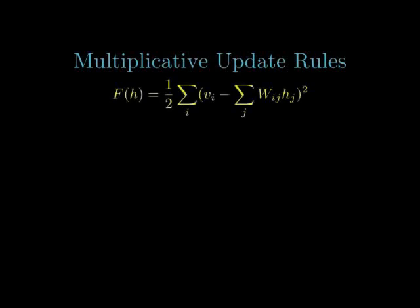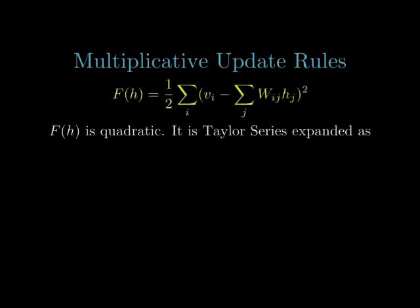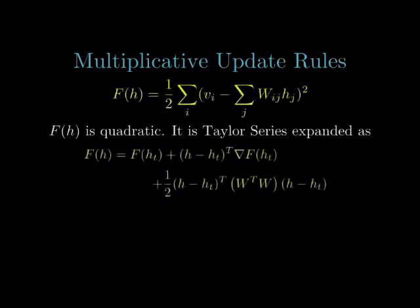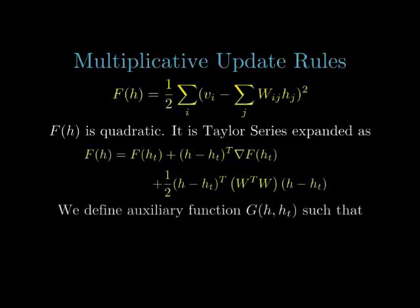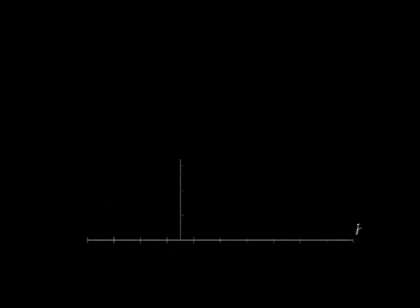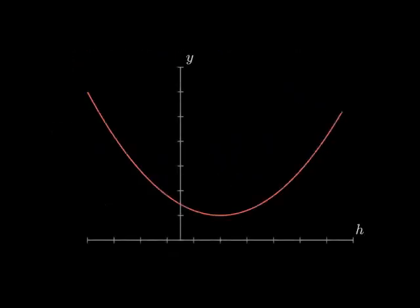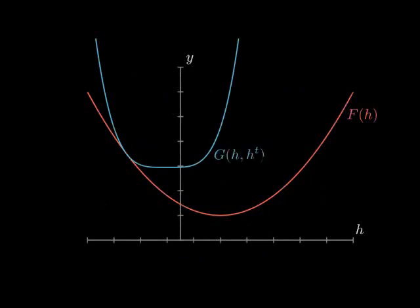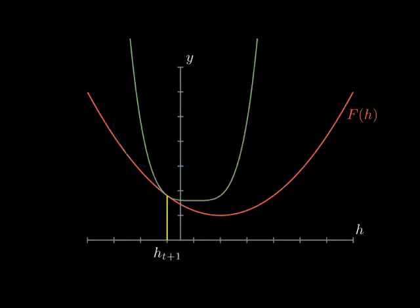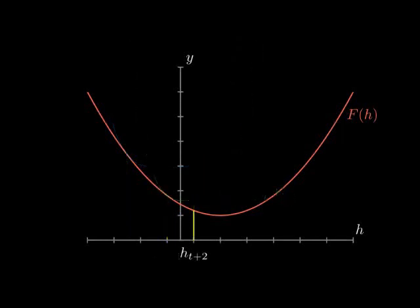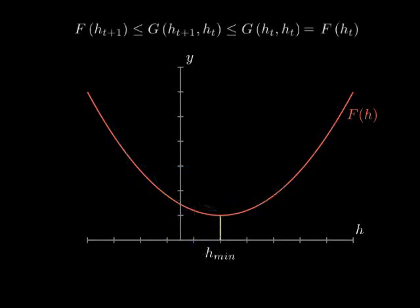We will obtain these by minimizing the Frobenius norm for a single column vector of the matrix H. Clearly, F is quadratic in H. Its Taylor expansion has at most second-order terms. We also define an auxiliary function G that equals F when H equals Ht and is greater than it otherwise. After defining G, we initialize H0 and at the t plus 1th iteration choose that H which minimizes G. F is non-increasing under such an update and keeps decreasing until H is the local minimum of G.